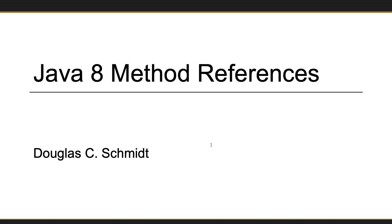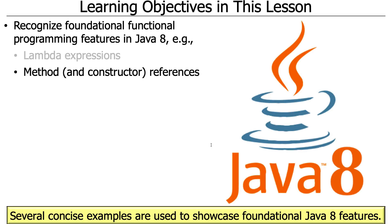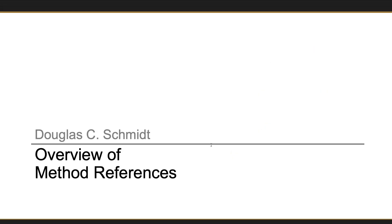Now that we've talked about lambda expressions, we're going to talk about another foundational Java 8 feature called method references. I'll show you a bunch of examples that will extend what we just talked about before. We'll also touch on constructor references briefly, though we'll go into those in much more detail later in the course.